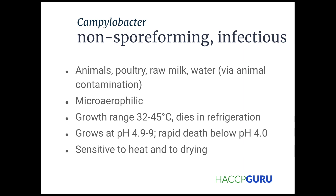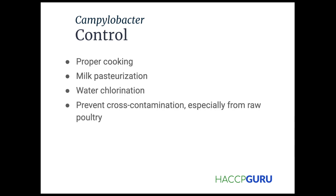Campylobacter: found in animals, poultry, raw milk, and water. It's microaerophilic and grows in a range of 32 to 45 degrees Celsius. It dies in refrigeration and grows at pH 4.9 to 9, with rapid death below pH 4.0. It's sensitive to heat and to drying. We control this through proper cooking, milk pasteurization, water chlorination, and preventing cross-contamination especially with raw poultry.